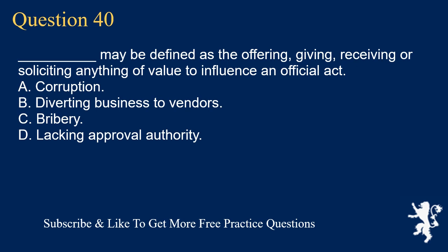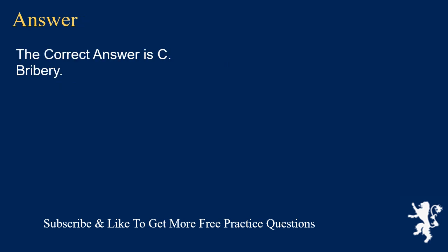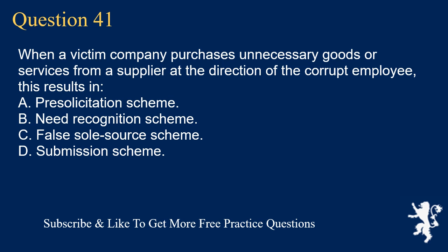Question 40: Underscore may be defined as the offering, giving, receiving, or soliciting anything of value to influence an official act. A. Corruption. B. Diverting business to vendors. C. Bribery. D. Lacking approval authority. The correct answer is C. Bribery.